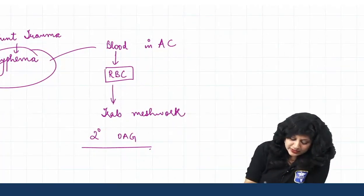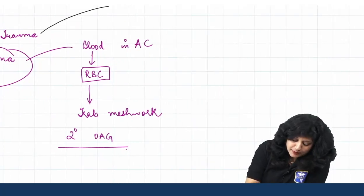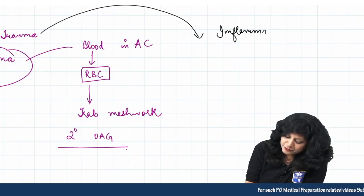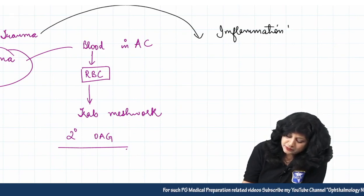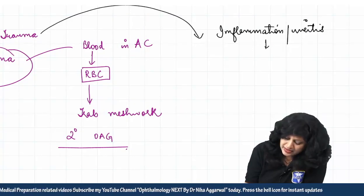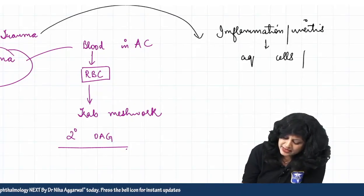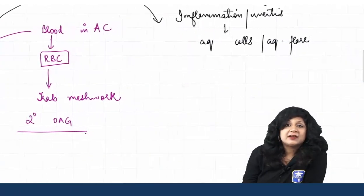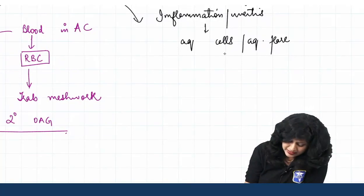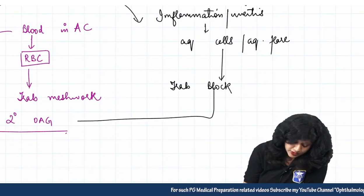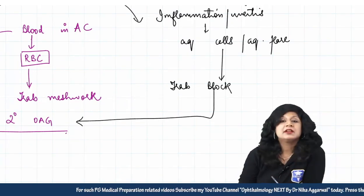The second important thing is that blunt trauma can also incite inflammation. Due to the trauma, if there is inflammation, we can have uveitis. Due to the uveitis, there will be aqueous cells as well as aqueous flare. These cells will flow in the aqueous humor and can again cause trabecular meshwork blockade, leading once more to secondary open angle glaucoma.